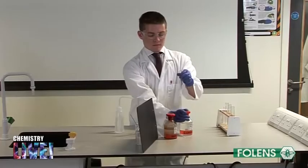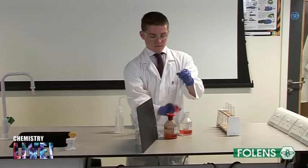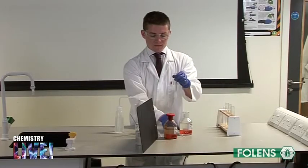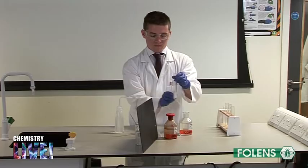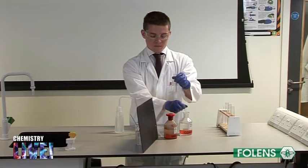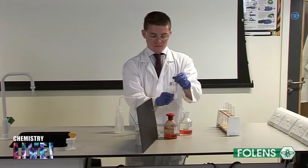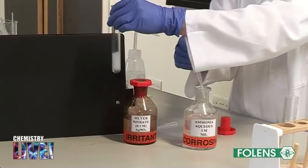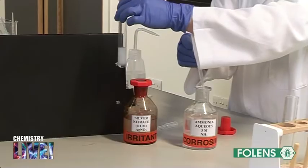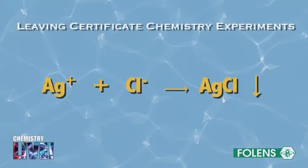The insoluble material formed is called silver chloride, and it forms when the silver ions from the silver nitrate combine with the chloride ions dissolved in water, as shown by the equation on the screen. Thus, the cloudiness is observed because insoluble silver chloride is formed.